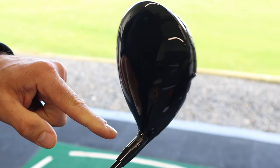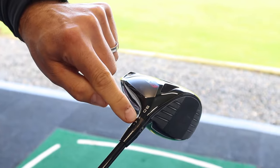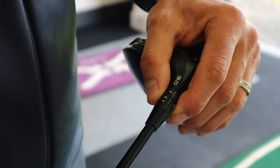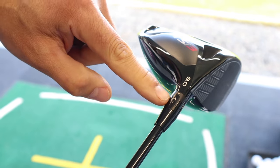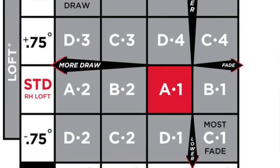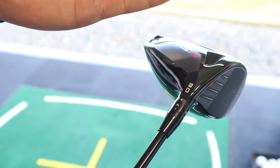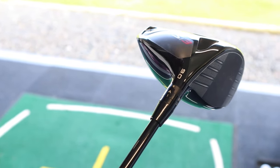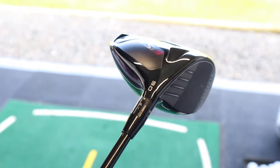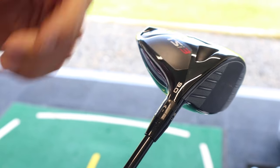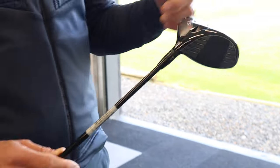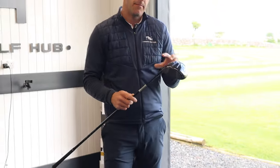As you can see, we've got all those different settings. Wherever you line up the letter and the number to that dot on the back of the hosel is what it's going to be set in. A1 is basically standard — 9 degree standard loft, square sitting club face, and a standard lie option. We're going to hit a few shots in A1, get some numbers, then have a little play around, test some other options, and see how that affects ball flight.